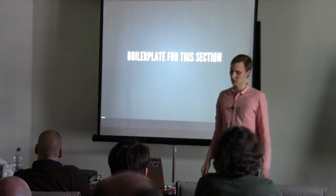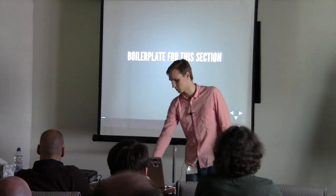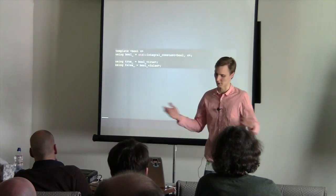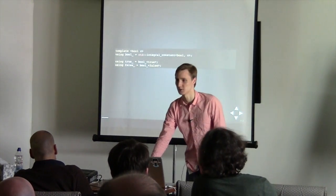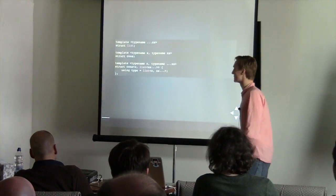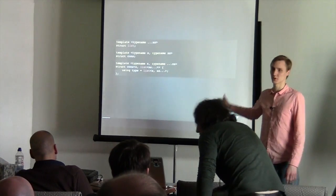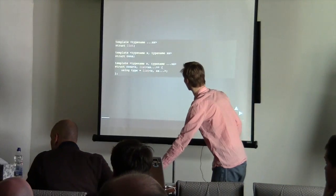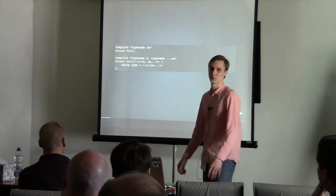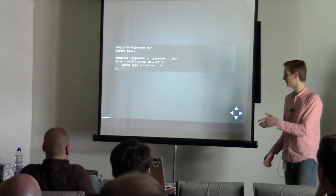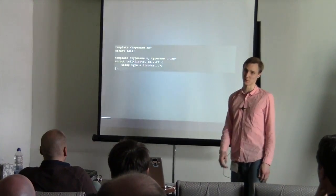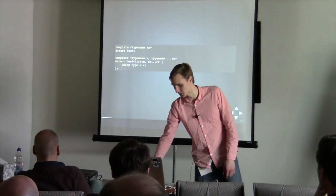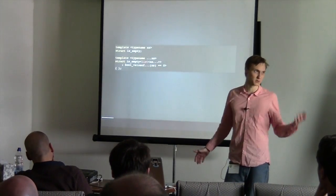First off, we'll need some boilerplate for the examples to compile. We include the standard Boolean integral constant setup, a simple list. The cons metafunction simply prepends an element to the list. Tail returns everything in the list except the first element — of course the list has to be non-empty. Head returns the first element in the list — also non-empty. And is_empty, well, it returns the obvious.